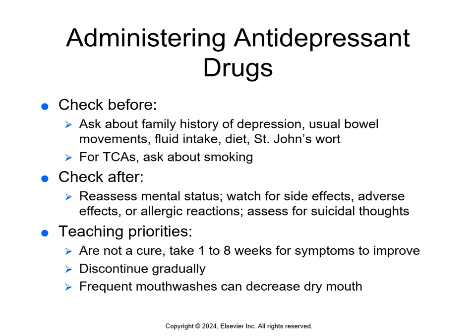Before I give these, I want to ask about any family history of depression. I also want to know their usual bowel movements, their fluid intake, their diet, and if they're taking St. John's wort. For tricyclic antidepressants, I want to know if they smoke. After I give these, I want to reassess their mental status, watch for side effects, adverse effects, or allergic reactions, and assess for suicidal thoughts.